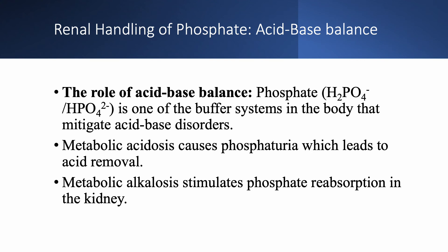Now, what about the role of acid-base balance in phosphate? We have two kinds of phosphate — monohydrate and dihydrate — with a ratio of 4 to 1. This is a very important buffer system called titratable acidity, which we'll discuss in detail in future lectures on metabolic acidosis. Metabolic acidosis causes phosphaturia, leading to acid removal, while metabolic alkalosis stimulates phosphate reabsorption in the kidneys — they have contrasting effects.